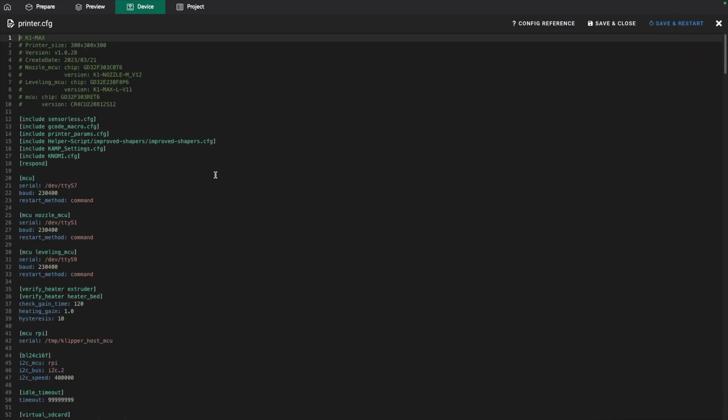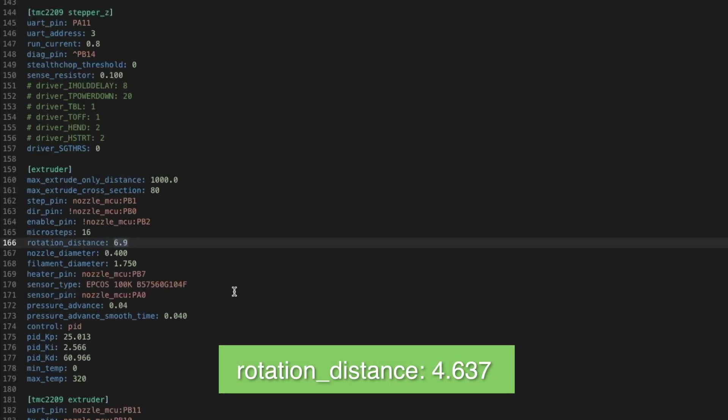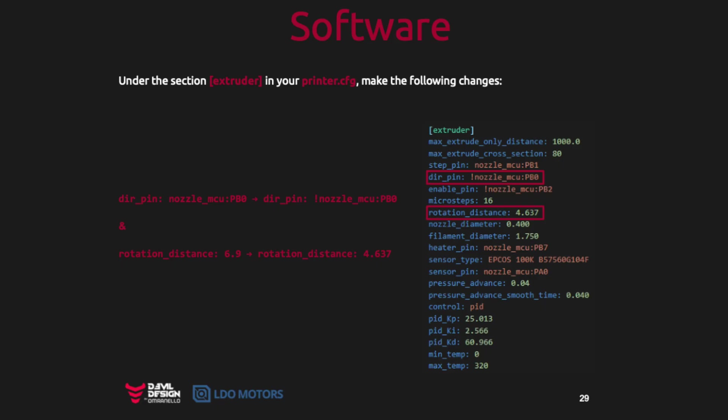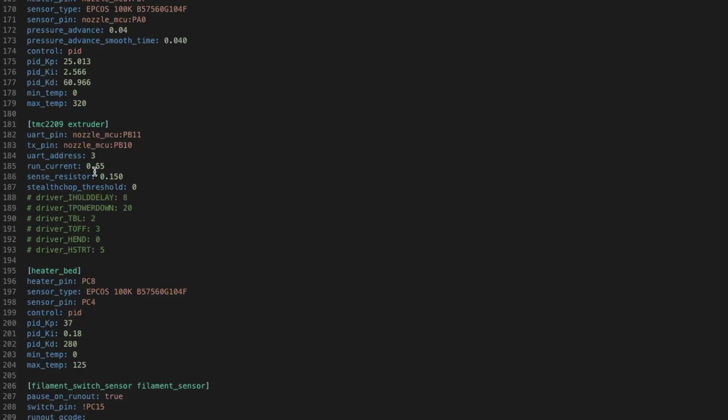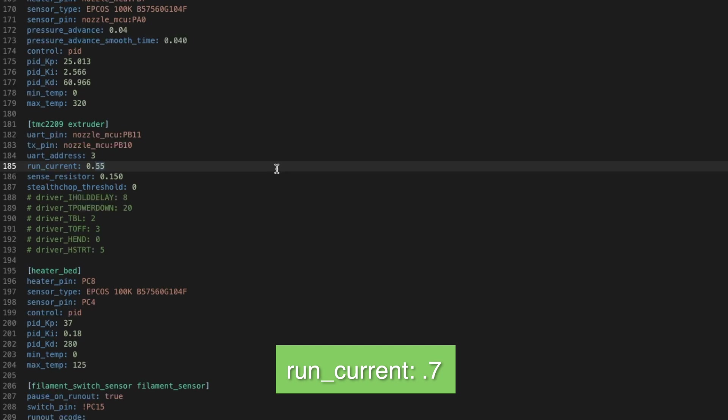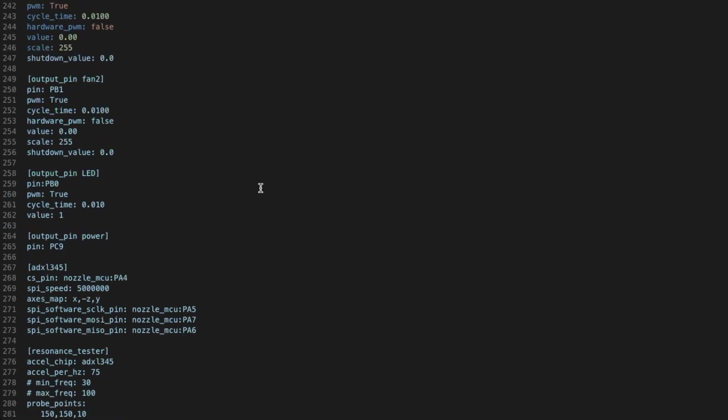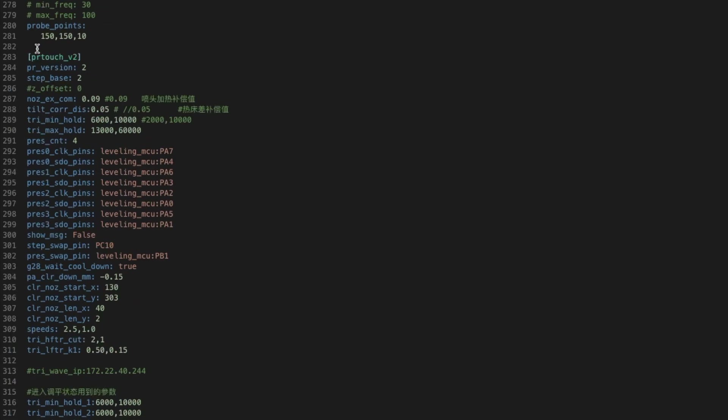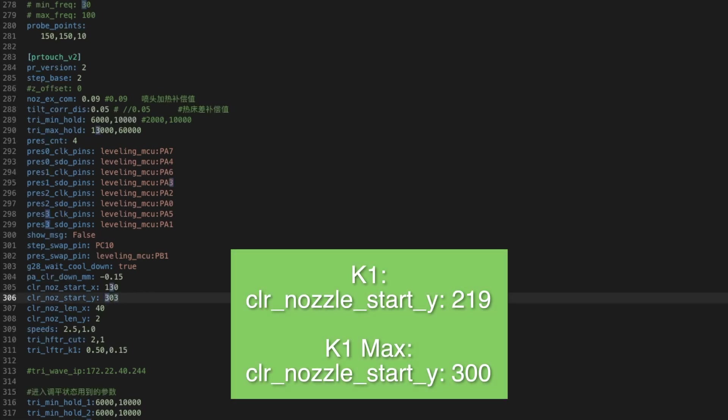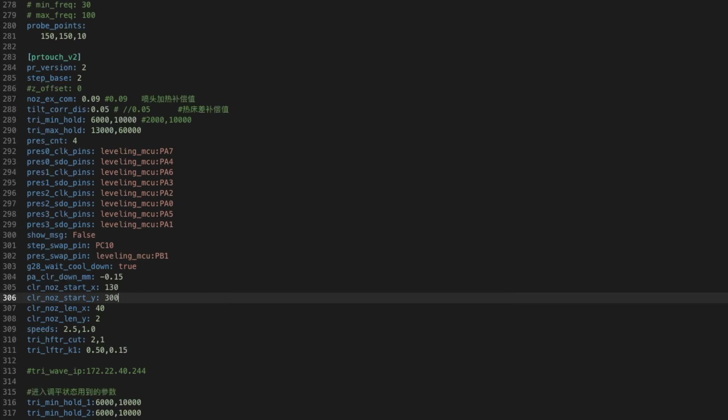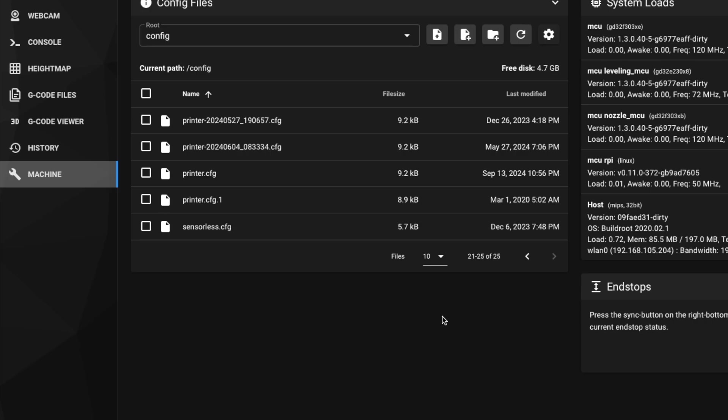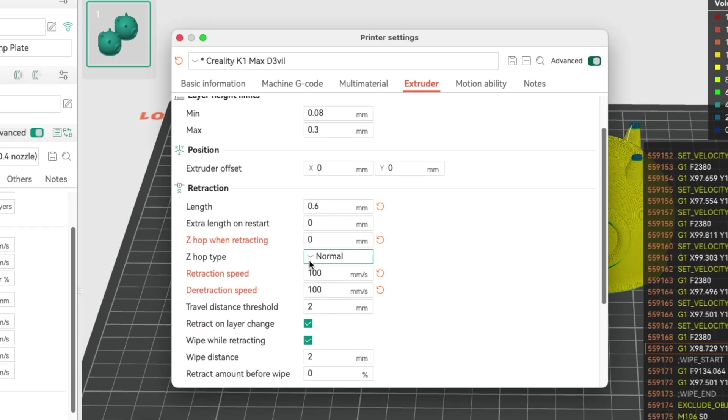Open your printer.cfg file in the web interface and locate the extruder header. Here we need to swap out the rotation distance to 4.637. The guide calls for adding an exclamation point to the direction pin which inverts the direction, but in my case this wasn't needed. Then under the TMC 2209 extruder header, we'll raise the run current from 0.55 to 0.7. Lastly, a change needs to be made to the PR Touch V2 section. This will differ depending on whether you have a K1 or K1 Max, but you'll be updating the Clear Nozzle Start Y to 219 for the regular K1 and 300 for the K1 Max. All that's left is to save and restart your firmware. You can play around with the extruder specific accelerations, but the only change I've made so far is setting the retraction length to 0.4 of a millimeter and doubling the retraction and de-retraction speed to 80 millimeters per second.